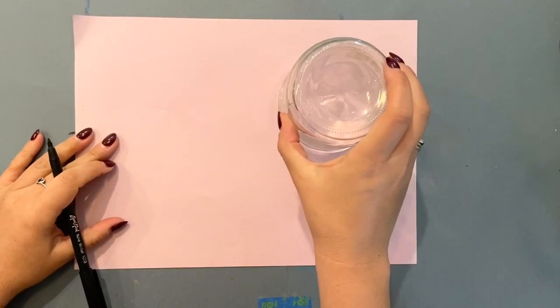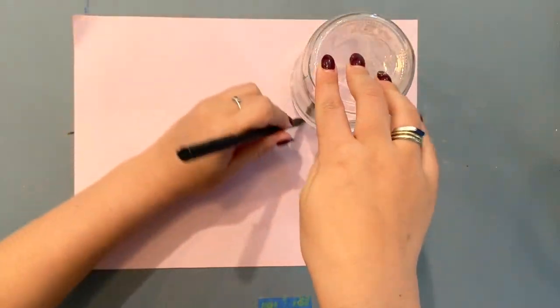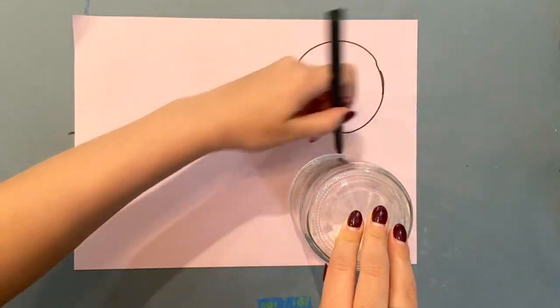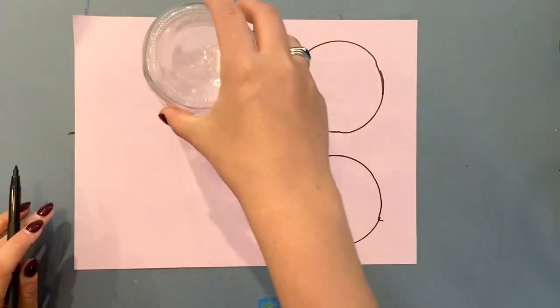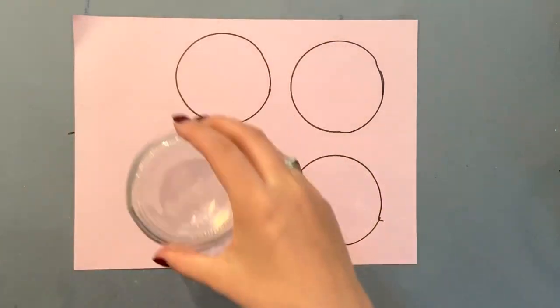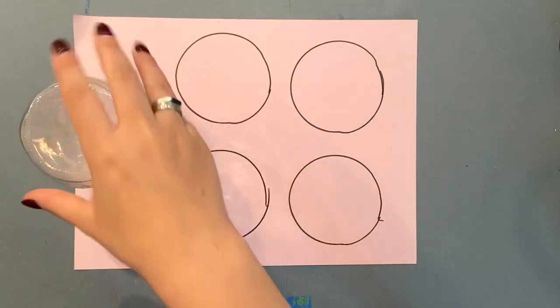To start our ice cream scoops, I have a blank sheet of paper and a round tracer. I'm going to make anywhere from five to six circles on my paper. This paper is a light pink, so if you have colored paper I would use it. If not, white is fine.